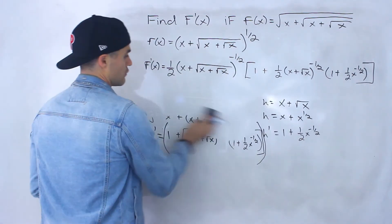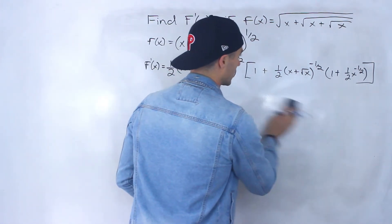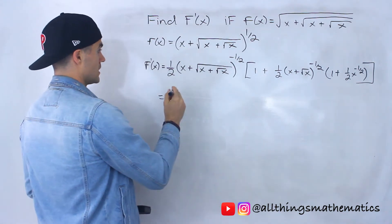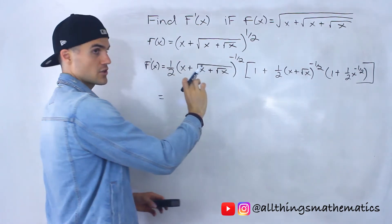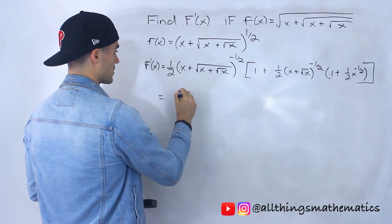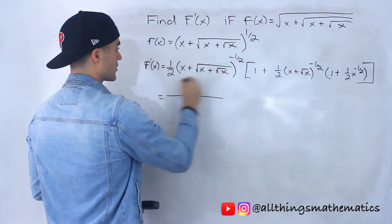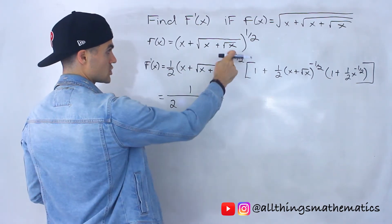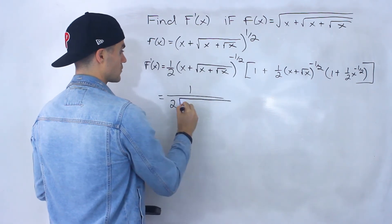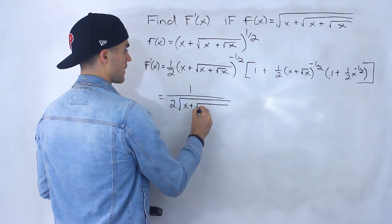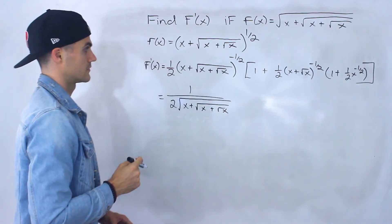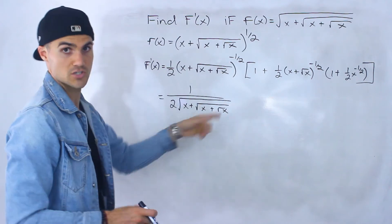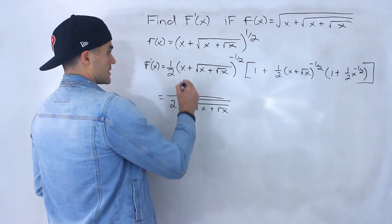That ends up being the final answer. If we want to make it look nicer, we can change all the negative exponents to positive exponents. Notice how we can bring this whole expression down to the denominator and it changes to the power of positive one half, which is the square root. So this expression here would be 1 over 2, and this comes down to the denominator as a positive one half — that's the square root of x plus the square root of x plus the square root of x.